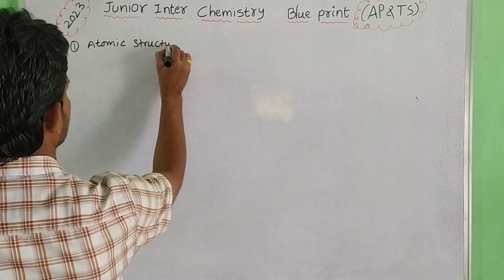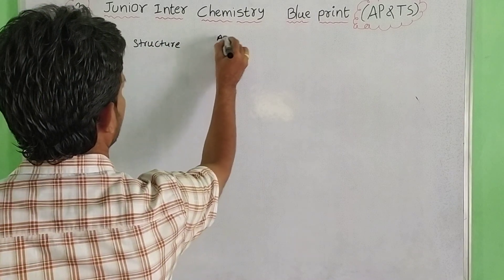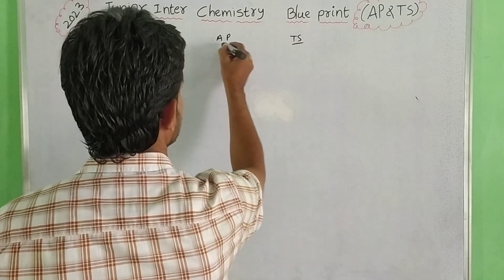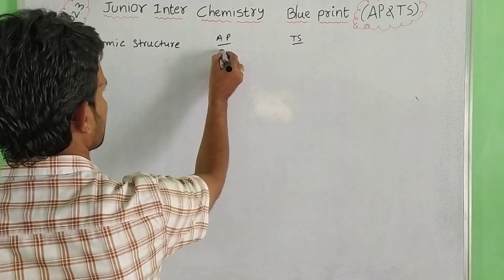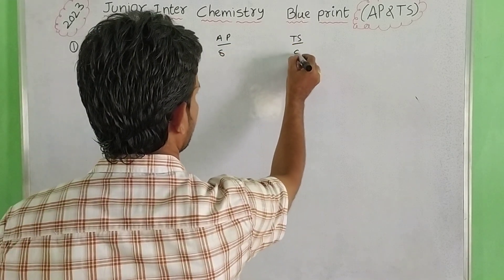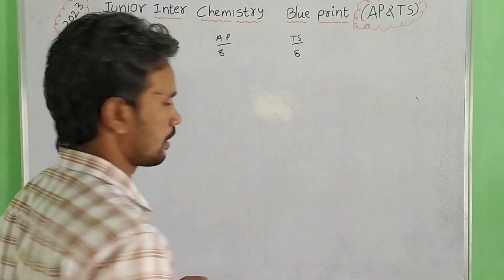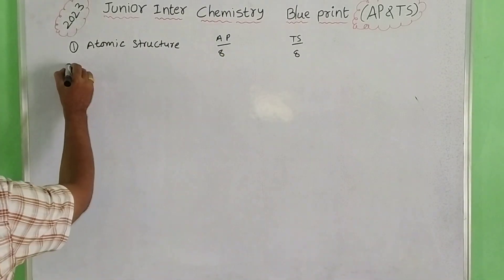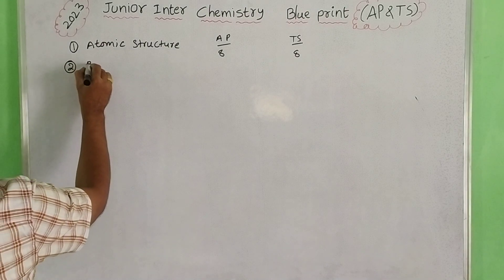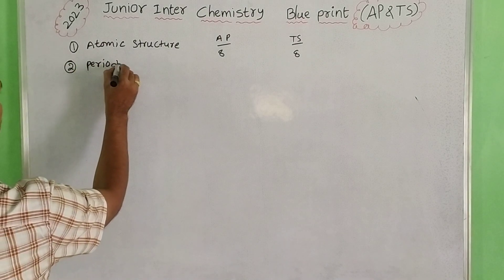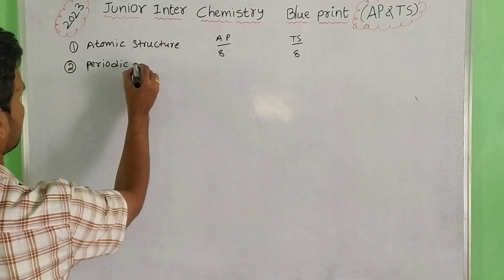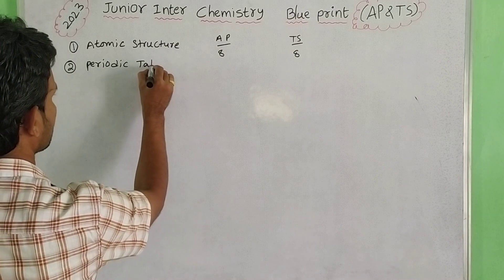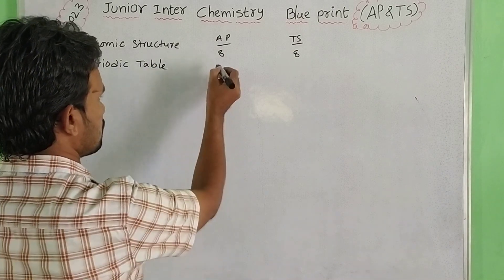Atomic structure. So atomic structure — AP and TS. AP weightage and SA weightage for atomic structure. SA weightage is listed here.